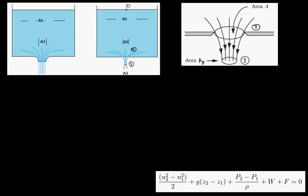Looking at the drawing in the top left with two tanks, the tank on the left has rounded edges on the bottom. We have an open tank draining through an opening at the bottom — the water level is falling. Following the dark blue streamline, you can see it follows the rounded corner and then exits the tank running perpendicular to the bottom surface on both sides. That's the case with nice rounded edges.